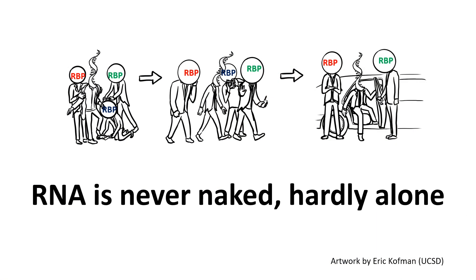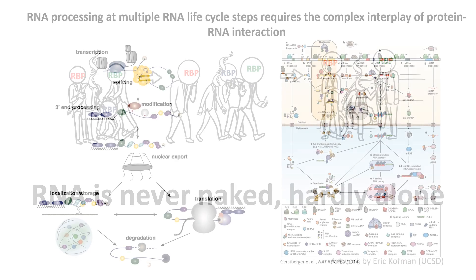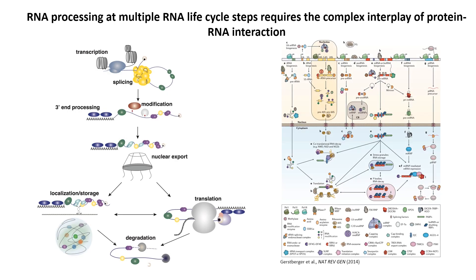RNA transcripts are subjected to a lot of RNA modifications and processing in eukaryotic cells. RNA binding proteins are a key class of regulators of RNA processing. Here is a cartoon from Eric Kaufman in my lab depicting RNA being followed and chaperoned by RNA binding proteins throughout its RNA life cycle. Here is a more complicated diagram showing that RNA processing at every single RNA life cycle step requires a complex interplay of RNA binding protein-RNA interactions.